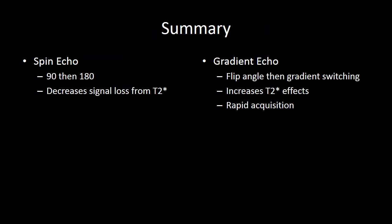In summary, we have two basic sequence types. The spin echo sequence uses a 90-degree excitation pulse and then creates your echo through a 180-degree refocusing pulse. This 180-degree refocusing pulse decreases your signal loss from T2 star effects and results in very high signal images. Gradient echo imaging uses a flip angle of less than 90 degrees and then refocuses your echo using gradient switching. This does not eliminate T2 star effects, and therefore you have a higher incidence of artifacts, particularly related to metal, gas, or any magnetic field inhomogeneity. The benefit of the gradient echo sequence is that you can have very rapid acquisition.